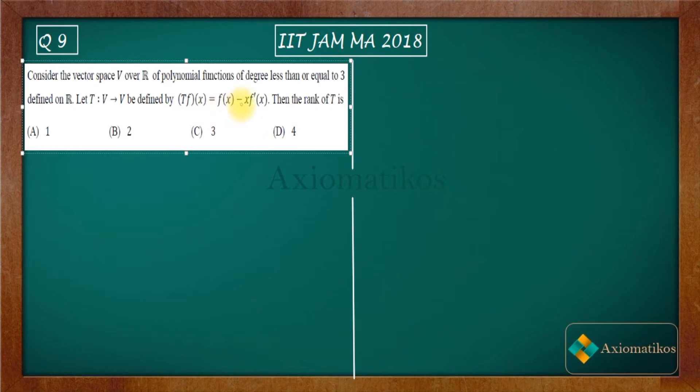Let T: V to V be defined by T(f(x)) = f(x) - x·f'(x). Then the rank of T is - so these are your options: 1, 2, 3, and 4. What you have to find out is the rank of T.